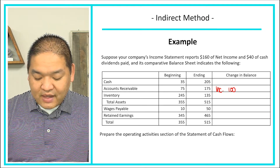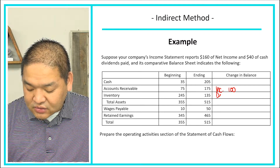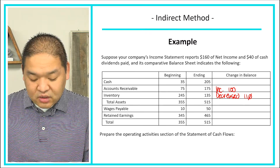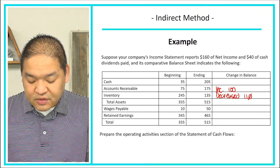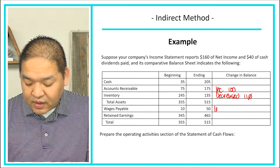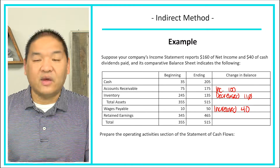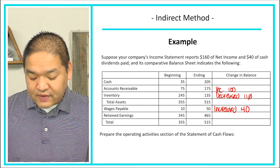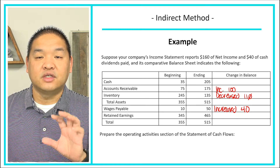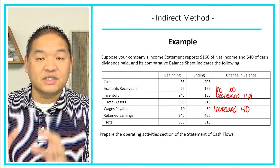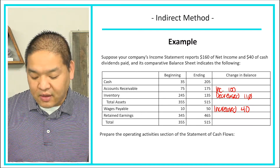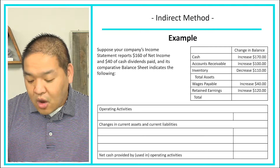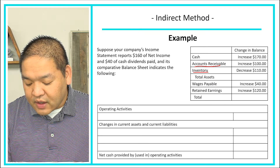From the balance sheet: accounts receivable increased by $100; inventory decreased by $110. Those are all the current assets. For liabilities, there's just one — wages payable — which increased by $40. We're not looking at retained earnings because that's not a current asset or current liability. So we have our three key numbers: accounts receivable up $100, inventory down $110, and wages payable up $40. Now we can start preparing the statement of cash flows.